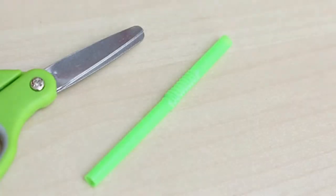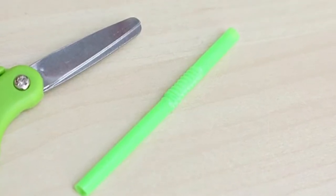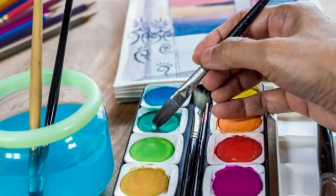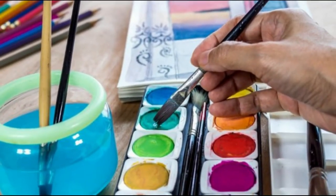White cardstock, bendy straw, markers, stickers, or other materials for decorating your spinning circle, and paint for decorating your cardboard tube.